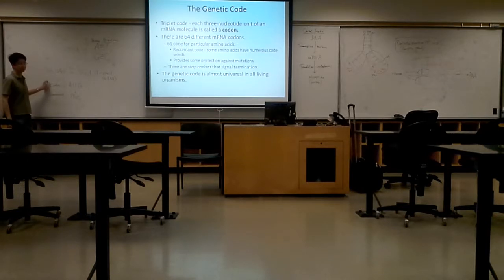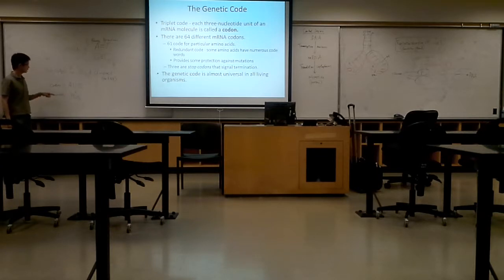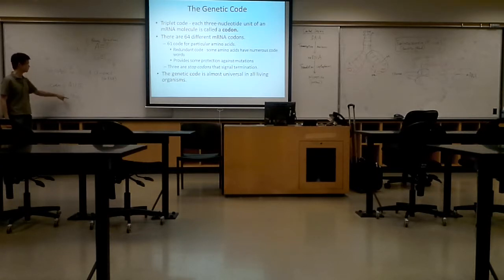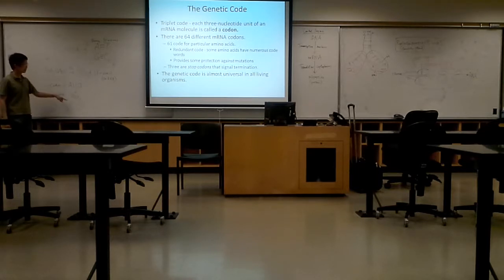So on the messenger RNA, it is a codon — A, U, G. And this codon always translates into an amino acid, methionine. And it is always like this.